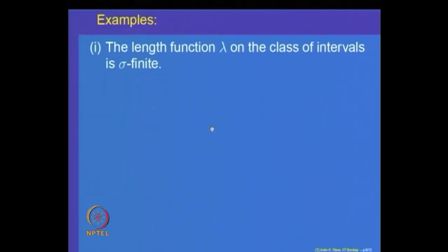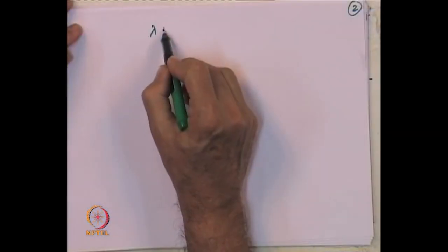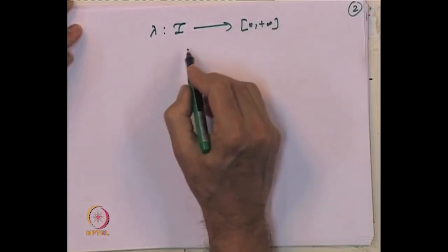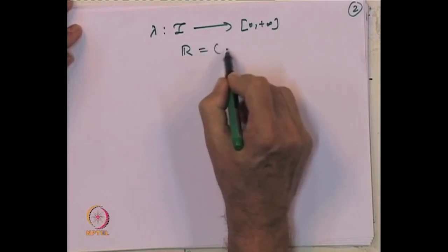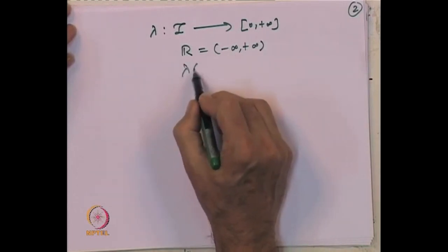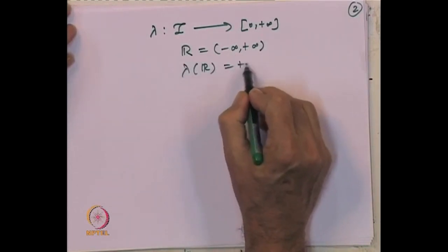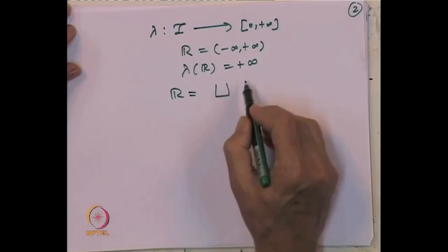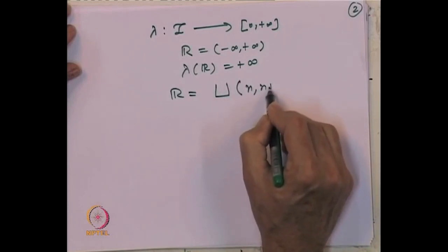Let us look at some examples of set functions. The length function lambda on the class of all intervals is sigma finite. Why is the length function sigma finite? Here is the length function lambda on the class of all intervals taking values in [0, ∞). The whole space — the real line — is the interval (−∞, +∞), and the length of R is not finite; it equals +∞. But we can write R as a disjoint union of intervals [n, n+1) for n belonging to the integers.